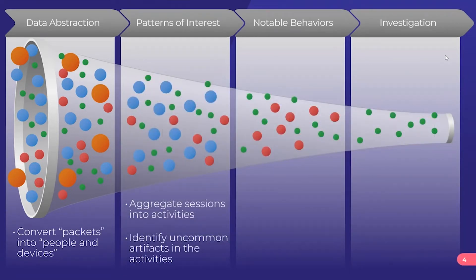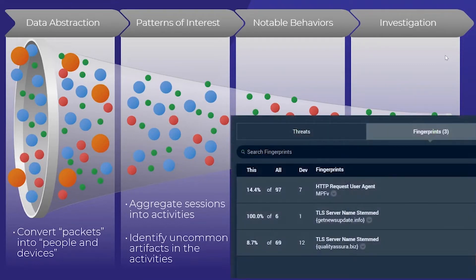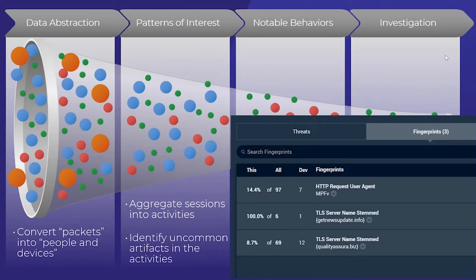Once we've normalized the data and have people and devices, we start to aggregate those sessions into activities and identify uncommon artifacts. We look across all the traffic, and for this particular device the system has determined these artifacts are uncommon and interesting relative to all other devices. This device is going to these servers using TLS traffic and shows this user agent in HTTP traffic — which turns out to be related to malware.